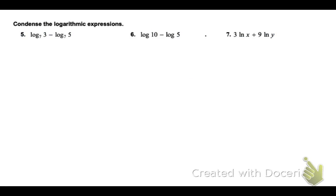In numbers 5 through 7, you're going to work backwards. You're going to condense. These logs are being pulled apart with subtraction, so we can condense them using division. So we take 3 divided by 5 and rewrite it in one log expression. The same with this one. Log 10 minus log 5, so since those values are subtracted, we can condense them with division. Log 2.